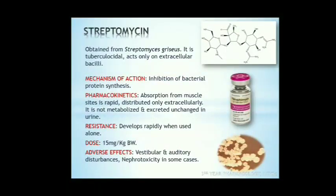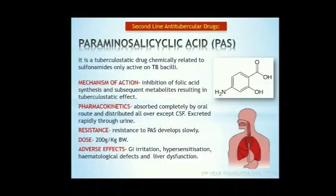Streptomycin. It was the first clinically used anti-tubercular drug, obtained from Streptomyces griseus. It is tuberculocidal but less effective than isoniazid and rifampin. It acts only on extracellular bacilli due to poor penetration into cells. Mechanism of action: inhibition of bacterial protein synthesis by binding with the 30S subunit of bacterial ribosomes. Absorption from intramuscular sites is rapid. It is distributed only extracellularly, neither absorbed nor destroyed in the gastrointestinal tract. It is not metabolized and is excreted unchanged in urine. Resistance develops rapidly when used alone. Dose: 15 mg/kg. Adverse effects include vestibular and auditory disturbances and nephrotoxicity.